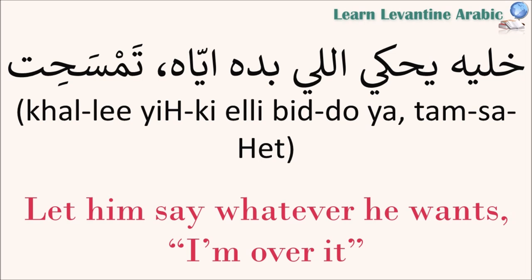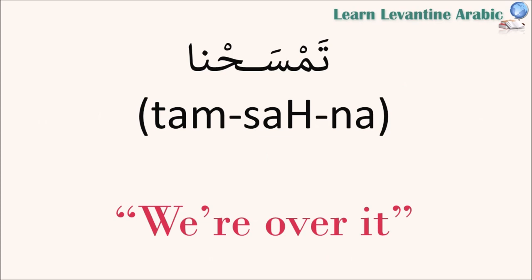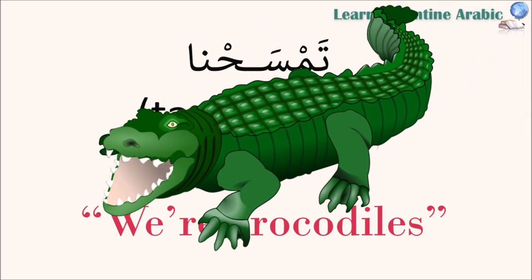To conjugate 'تمسح' with 'we' you say 'تمسحنا'. 'تمسح' probably comes from the word 'تمساح' which means crocodile — so you're developing thick skin like that of a crocodile, and you're a bit more immune to the negative things that are happening around you.